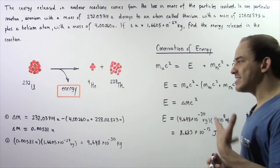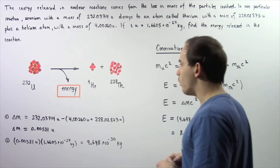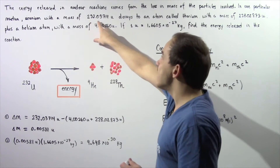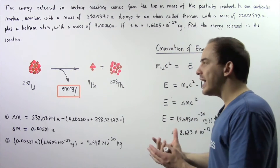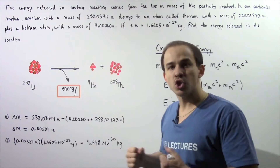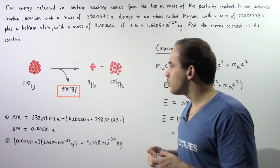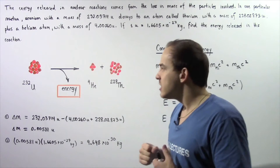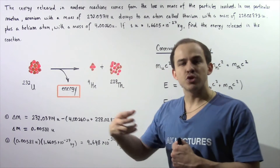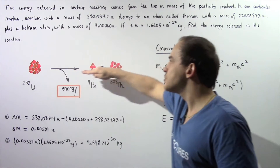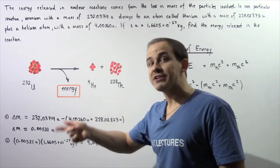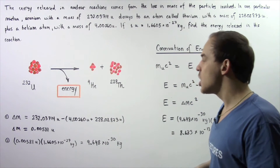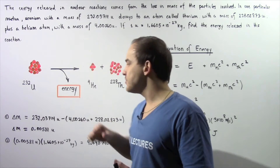Let's begin by describing what is taking place by looking at the following diagram. Initially, we have a single uranium atom with the given mass. That uranium atom is unstable, so it breaks down into more stable atoms — a single helium and a single thorium. When it breaks down, some of the mass it initially had is transformed into energy. Energy is released as a result of that transformation, and these two more stable atoms are formed.